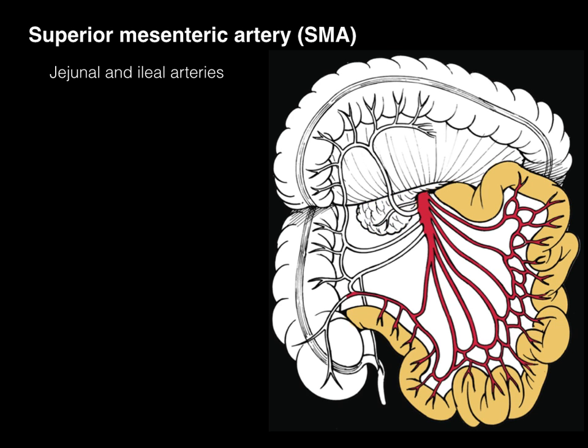All of the other branches are jejunal and ileal arteries supplying the jejunum and ileum respectively. Notice these long arteries — they form really cool arcades and then give all these tiny branches providing a rich vascular supply to the small intestines, all within the mesentery.